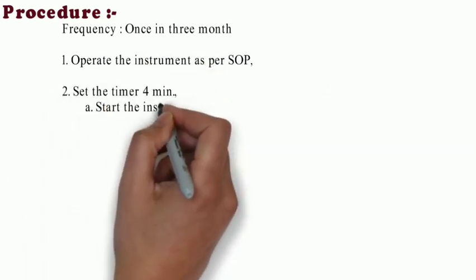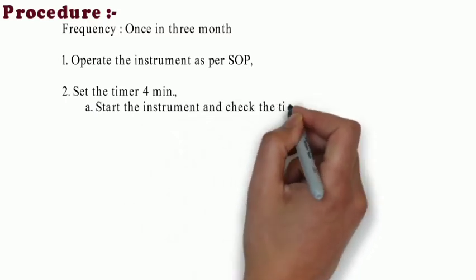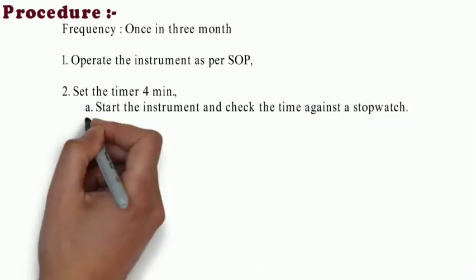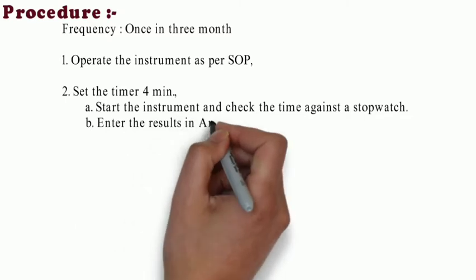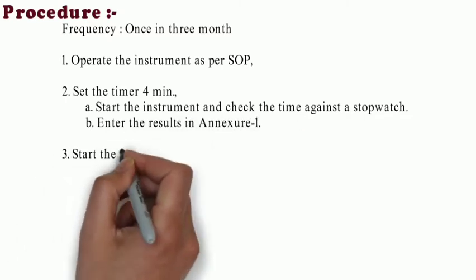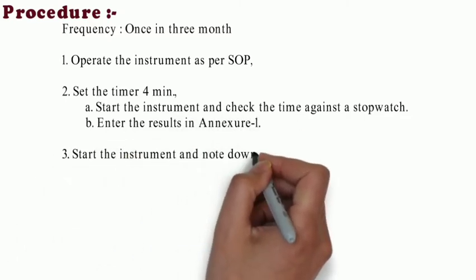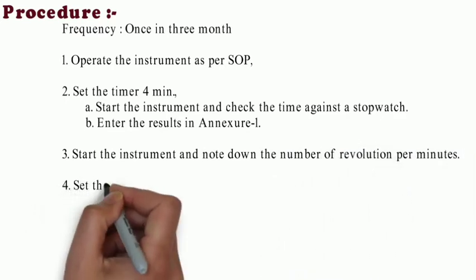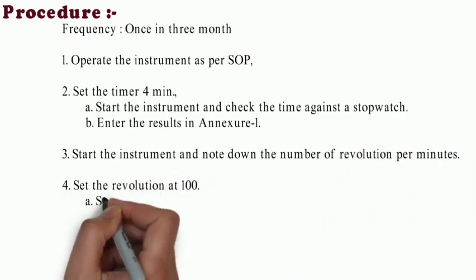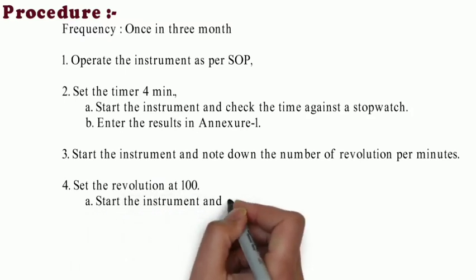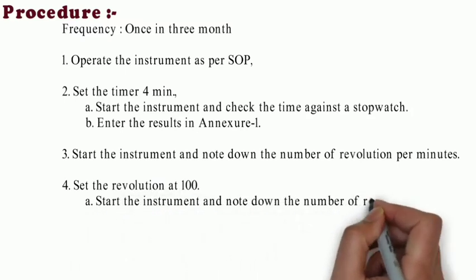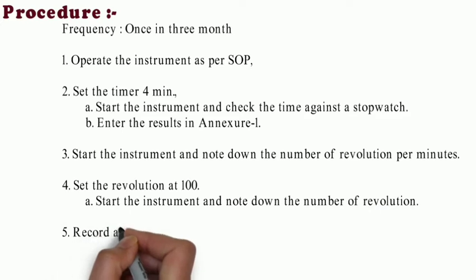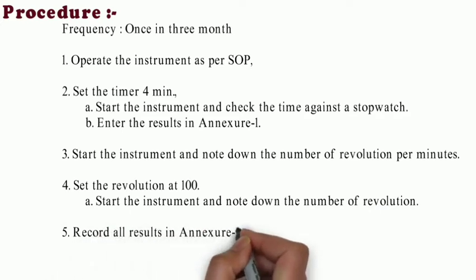In procedure, first of all, frequency is once in three months. Operate the instrument as per SOP. Set the timer for four minutes, start instrument and check the time with a stopwatch. Enter results in Excel. Start the instrument and note down the number of revolutions per minute.